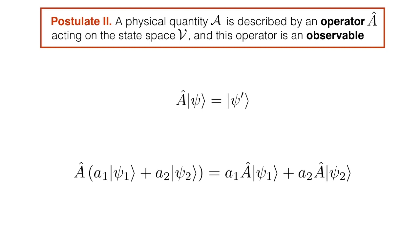Operators are fundamental in quantum mechanics because they describe physical properties. This is reflected by the fact they feature in the second postulate of quantum mechanics, which says that a physical quantity a is described by an operator a-hat acting on the state space V, and that this operator is called an observable. Postulate 2 tells us that operators act on state space — they act on kets, which are the vectors of state space, and therefore modify these kets in some manner. We represent this as operator a-hat acting on a ket psi delivering another ket psi-prime, where both psi and psi-prime belong to the state space.